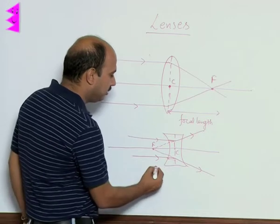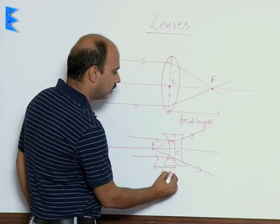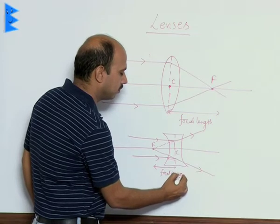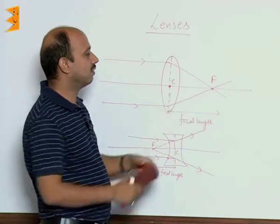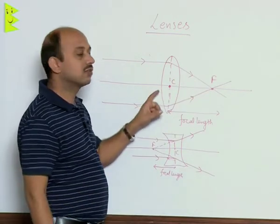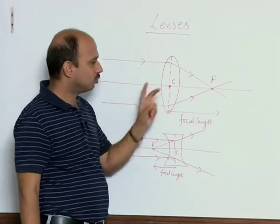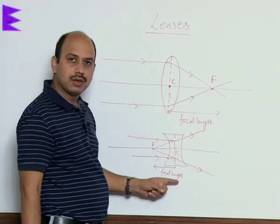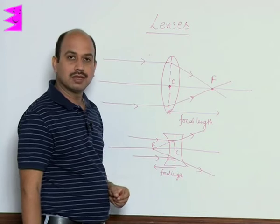The distance between F and C is also known as focal length. This lens is converging rays after refraction, so this is considered or known as convex lens as well as converging lens. Similarly here the rays are being diverged, so this is known as diverging lens.